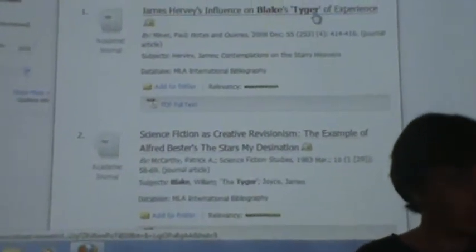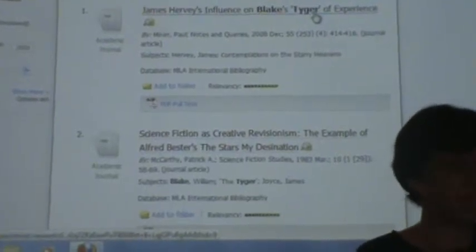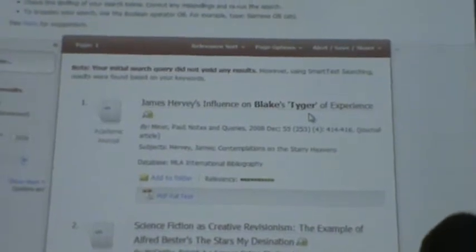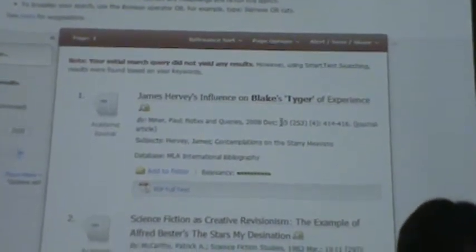There are five things that work, five things that it found. Five whole articles. Some of these may be irrelevant. However, James Hervey's influence on Blake's Tiger of Experience is in Notes and Queries.